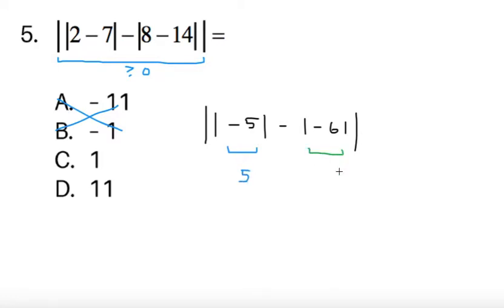Absolute value of negative 5 is just 5. The absolute value of negative 6, it's just 6. So, absolute value of 5 minus 6. Now, 5 minus 6 gives me negative 1. So, the absolute value of negative 1, that's equal to 1. So, we have choice C for this item.